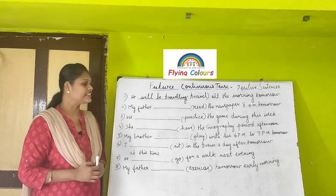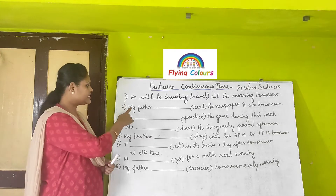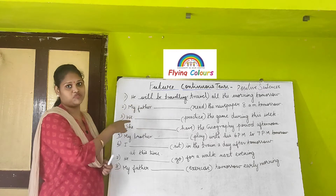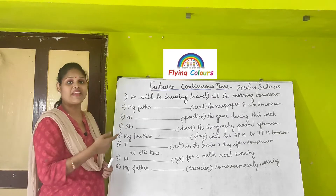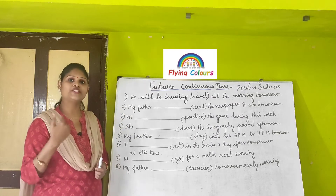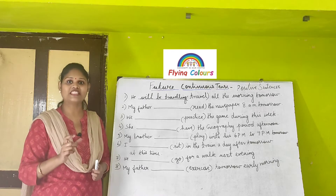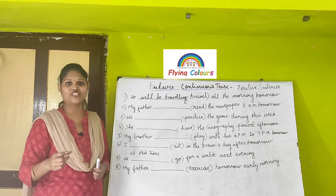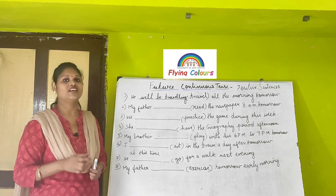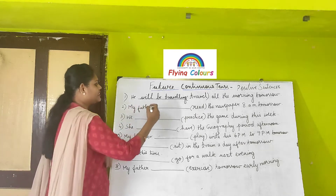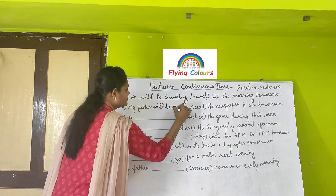Second sentence: 'My father ___ read the newspaper at 8 a.m. tomorrow.' Here, 'my father' is the subject. Applying the formula: will plus be, and the main verb is 'read,' so you need to change it into the present participle 'reading' by adding -ING. So: 'My father will be reading the newspaper at 8 a.m. tomorrow.' This is future continuous tense.